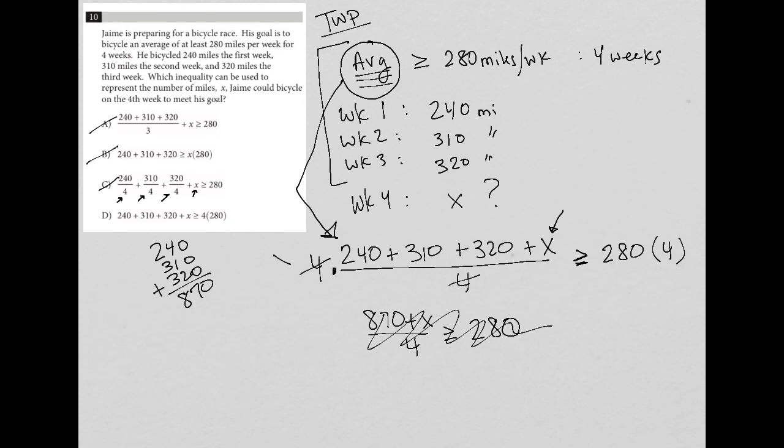And then D looks like, oh, D looks like exactly what we did here, where if we multiply both sides of the inequality by four, then we end up with this numerator here. Our 240 plus 310 plus 320 plus X is greater than or equal to, and then we have this 280 times four. So therefore, choice D is the best answer here.